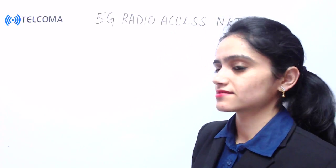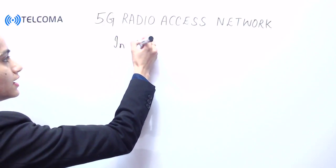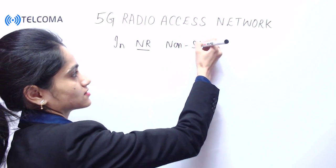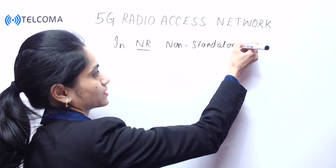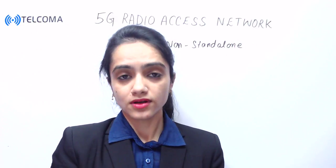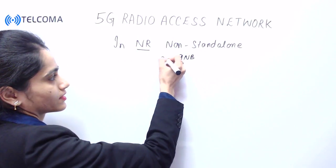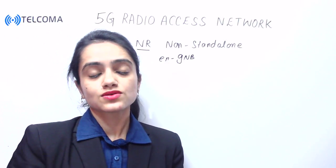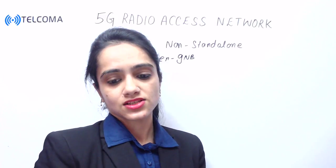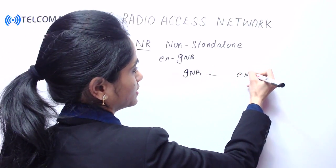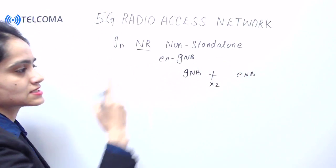Hello everyone and welcome to class on 5G Radio Access Network. Today we will discuss 5G RAN. In NR — New Radio — non-standalone operation, the new radio base station is denoted as gNodeB. This gNodeB connects to the LTE base station, which is eNodeB, via the X2 interface. This configuration is for non-standalone operation.